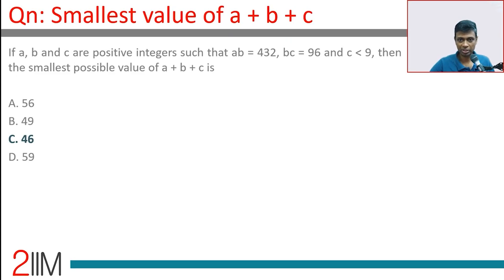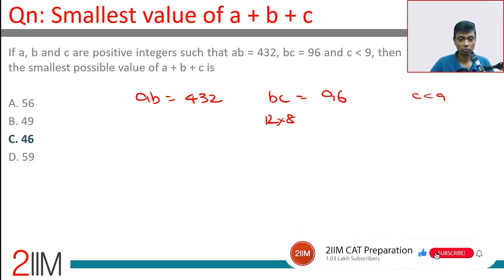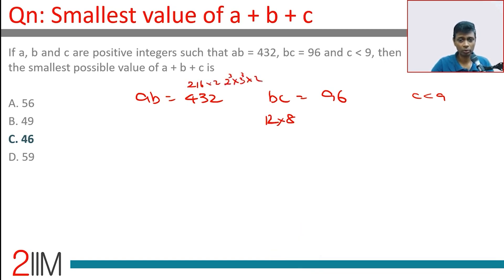a×b is 432, b×c is 96. We need positive integers with c less than 9. To approach this, keep the product involved — keep the numbers as low as possible or as close to each other as possible. 432 is 2 to the power 4 into 3 cube, so keeping it in terms of prime factorization could be easier.